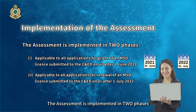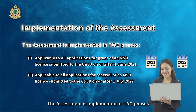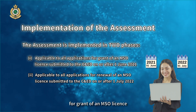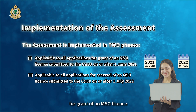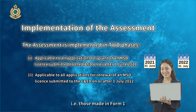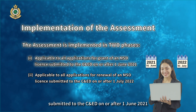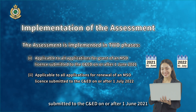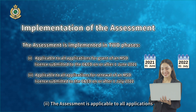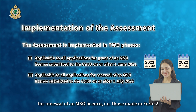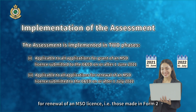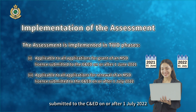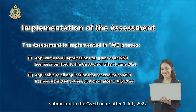The assessment is implemented in two phases. Phase 1: the assessment is applicable to all applications for grant of an MSO license — that is, those made in Form 1 — submitted to CNED on or after 1 June 2021. Phase 2: the assessment is applicable to all applications for renewal of an MSO license — that is, those made in Form 2 — submitted to CNED on or after 1 July 2022.